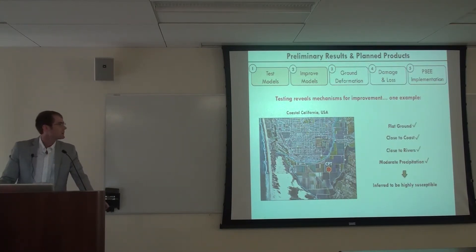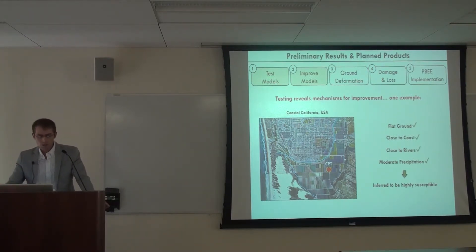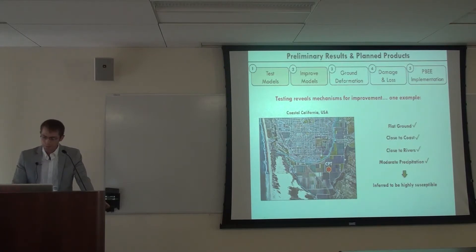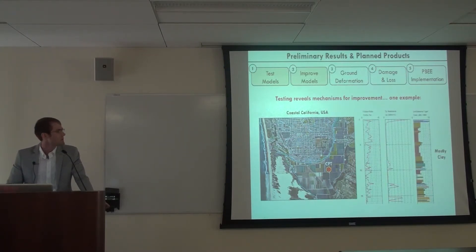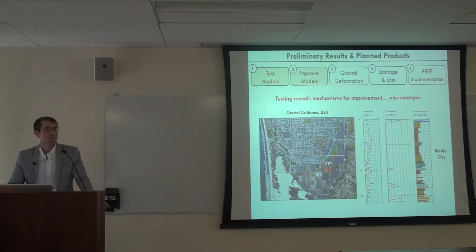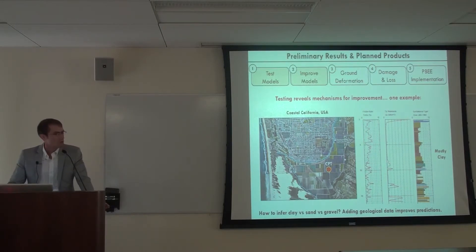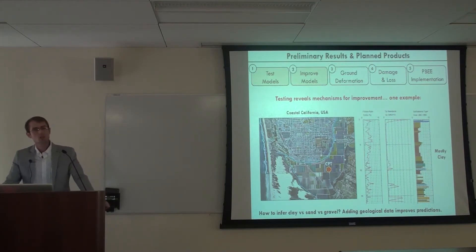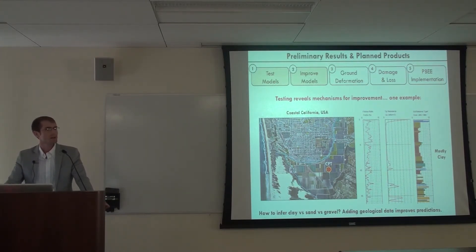This has put us on the road to improving the models. One quick example: a site in coastal California on flat ground, close to the coast and rivers, with some rain — the geospatial model says this should be highly susceptible. But CPT data from this site shows mostly clay in the subsurface, so we wouldn't expect much surface manifestation. The challenge is that these valleys all look the same from above — how do you know if it's clay, sand, or gravel? This has taken us back to geology maps that geospatial models ignore, showing quite a nice improvement.